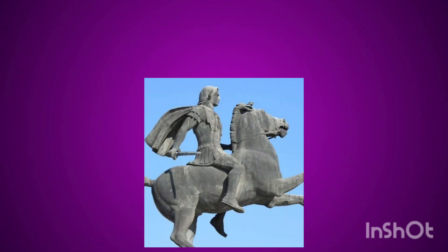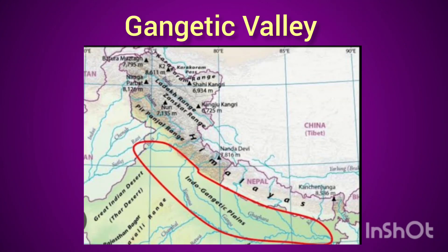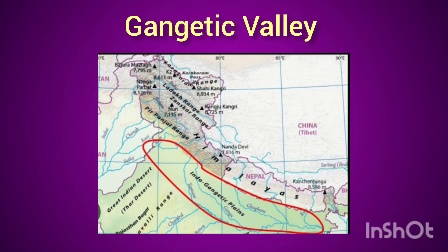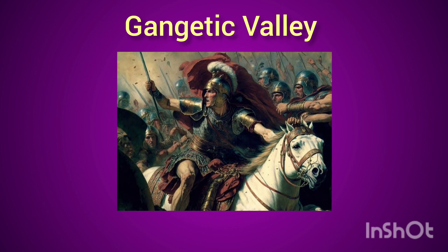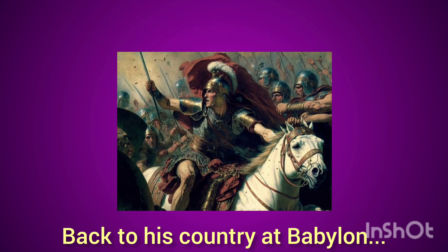After this victory, Alexander the Great wanted to enter into the Gangetic Valley, which was at the time ruled by the powerful Nandas. But Alexander had to make a retreat because his soldiers were not ready — they were tired of long and continuous warfare and had become homesick.